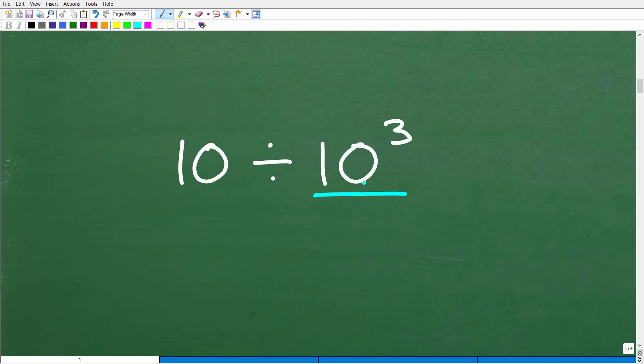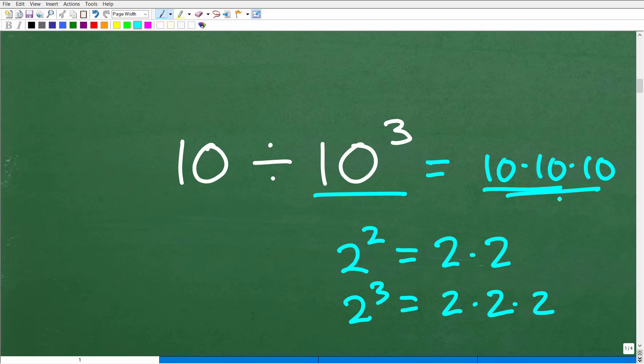Let's just make sure you understand what 10 cubed is. We'll start off with something like 2 squared. 2 squared means take 2 and multiply it by itself 2 times. 2 cubed means take 2 and multiply it by itself 3 times: 2 times 2 times 2. So 10 cubed means take 10 and multiply it by itself 3 times. Now you could figure this out. 10 times 10 is 100, times 10 is 1,000. You can do this in different steps.